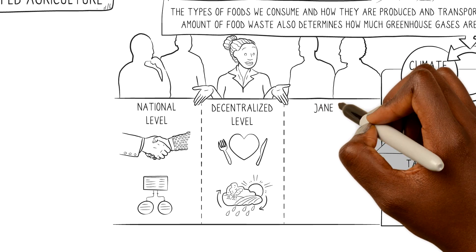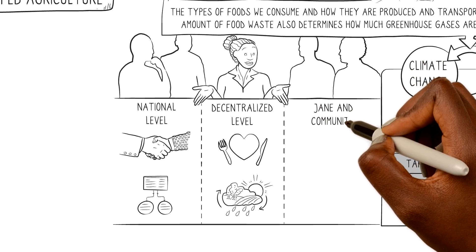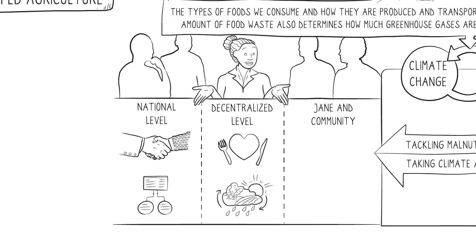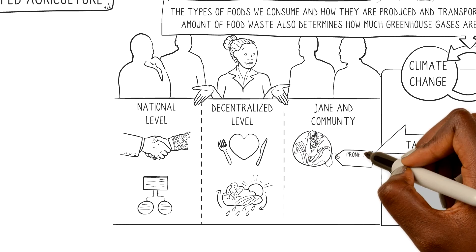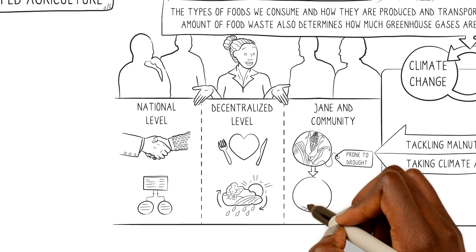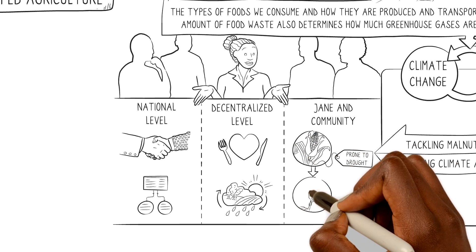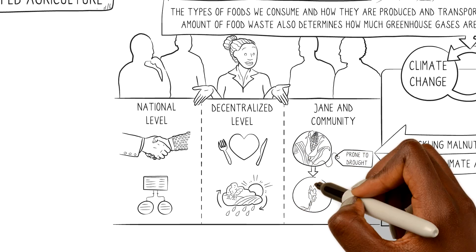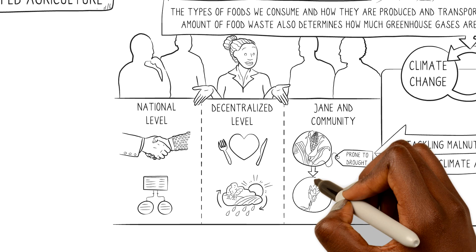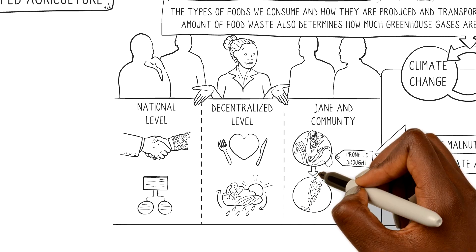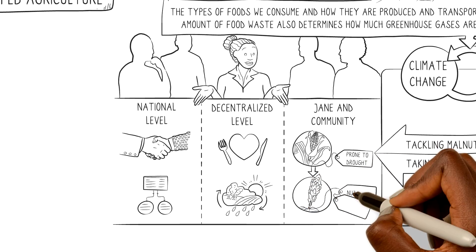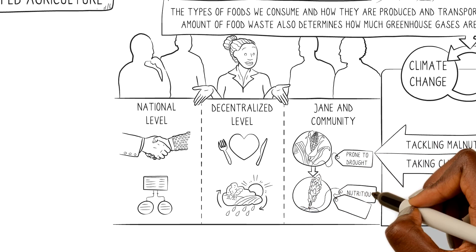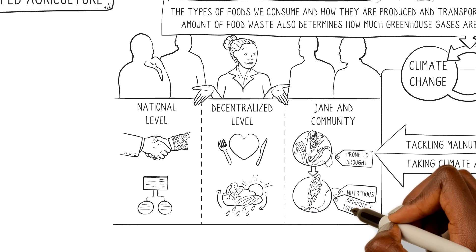But Jane and her community can also take action on their own. Instead of growing maize, which is prone to drought, Jane could consider other cereal grains — such as traditional grains like sorghum and millets — which are both nutritious and drought-tolerant.